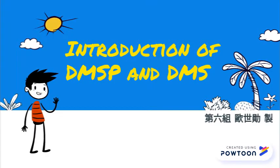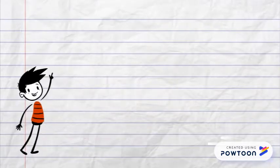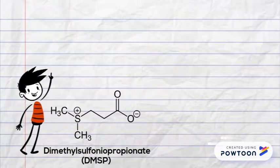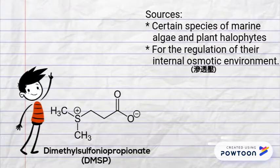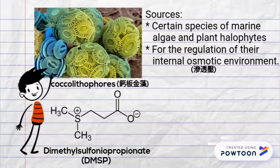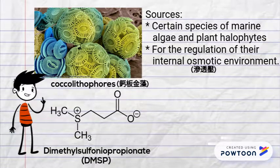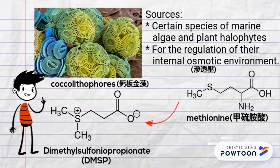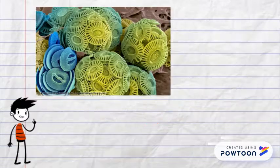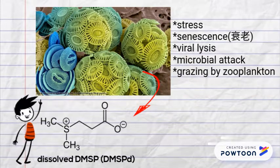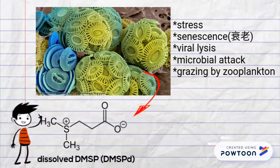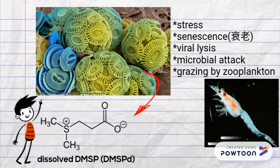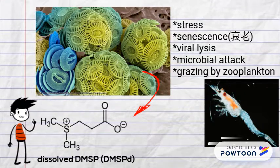DMSP, dimethylsulfoniopropionate, is a compound produced in high concentration by certain species of marine algae and plant halophytes for the regulation of their internal osmotic environment. The synthesis of DMSP originates from methionine in both plants and algae, but the pathways differ from there. DMSP leaches from phytoplankton during stress, senescence, viral lysis, microbial attack, and grazing by zooplankton. Its flow to marine heterotrophs constitutes a part of the microbial loop.